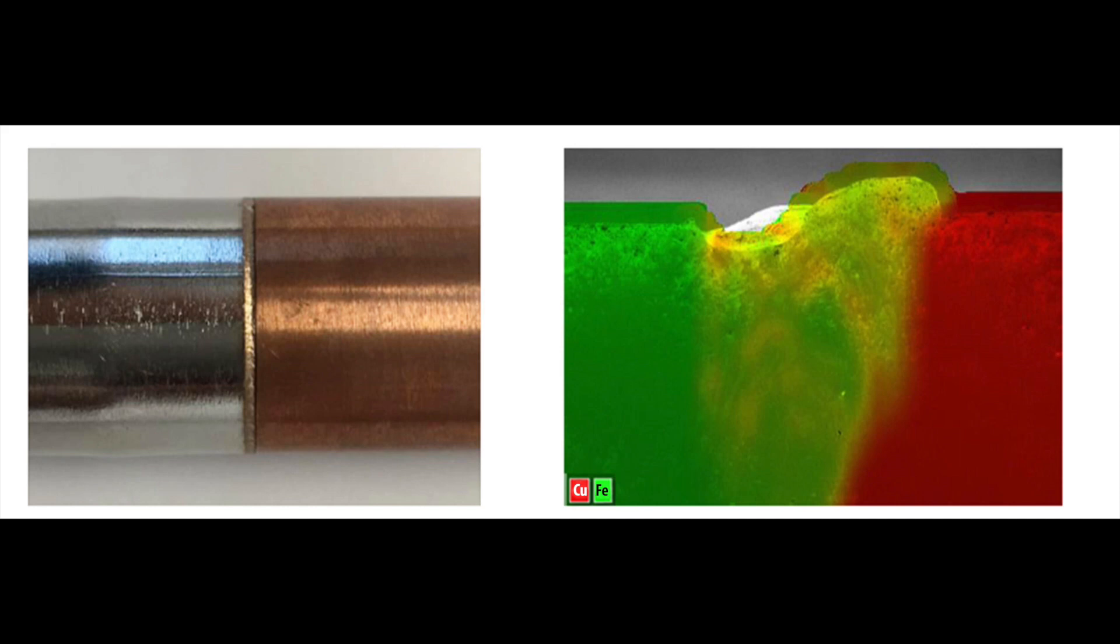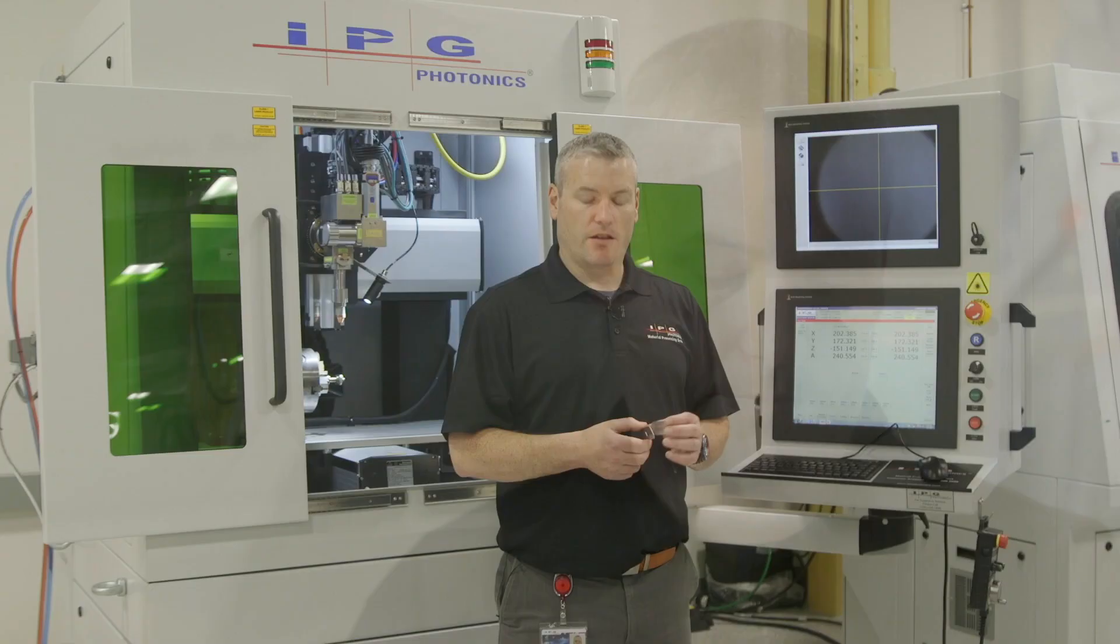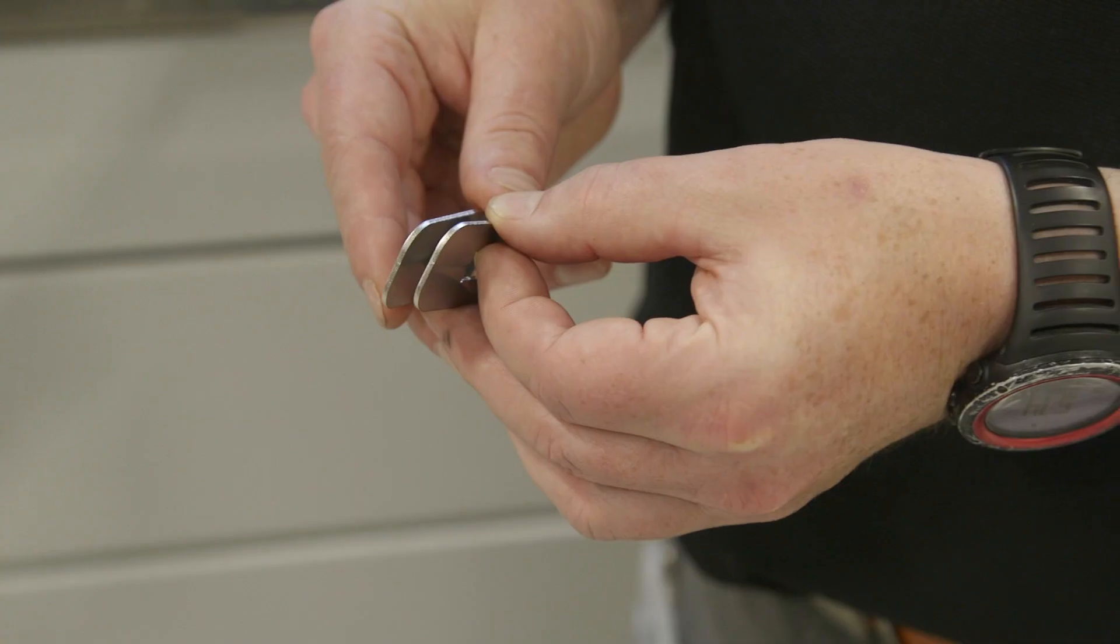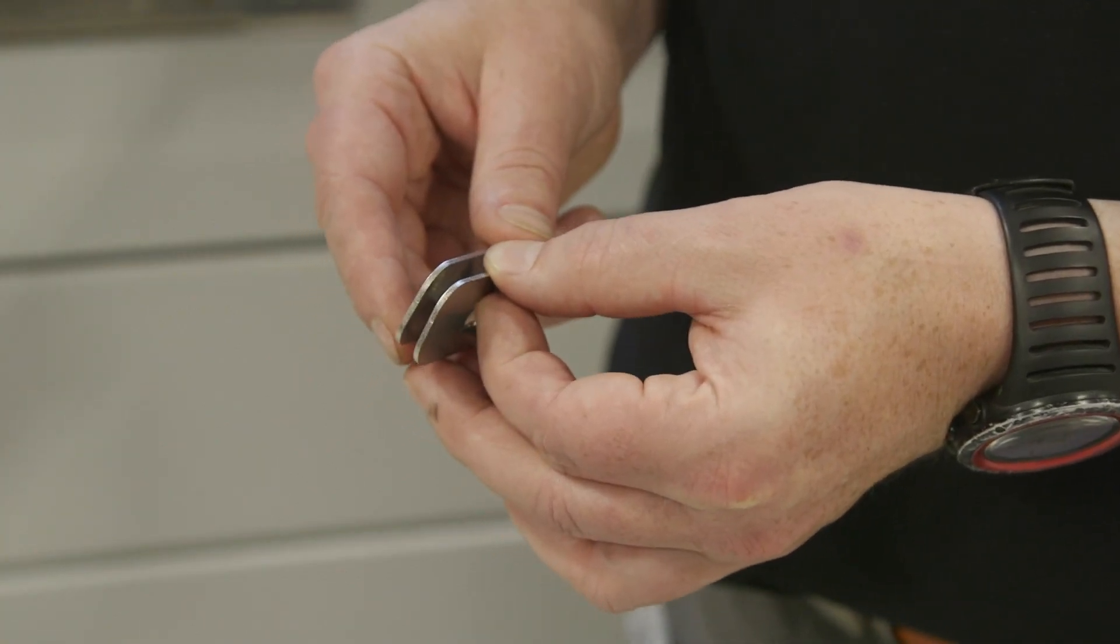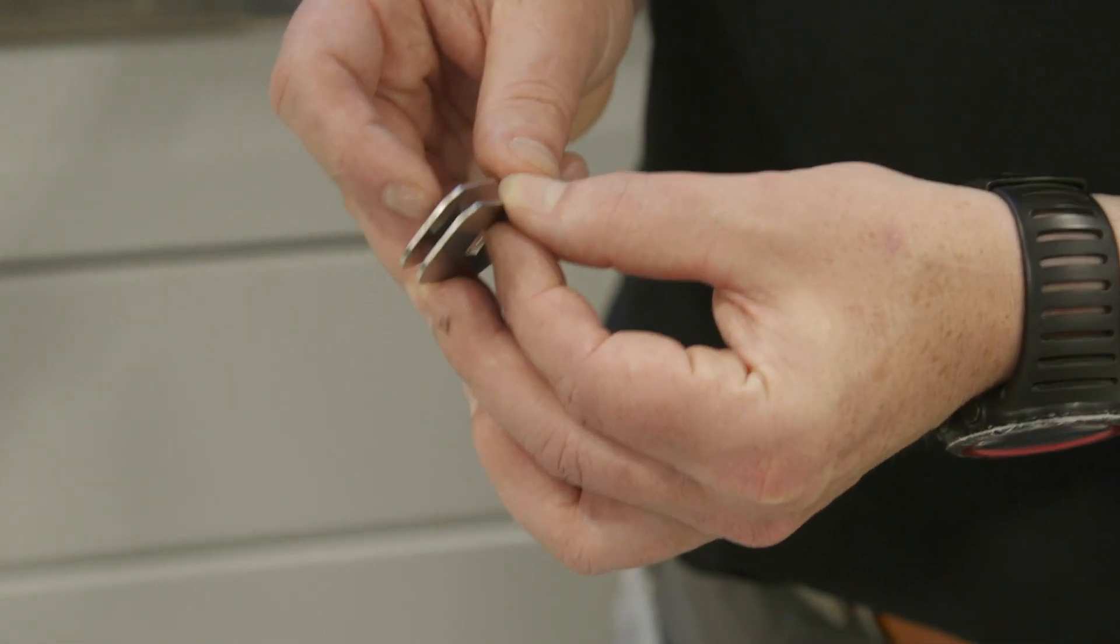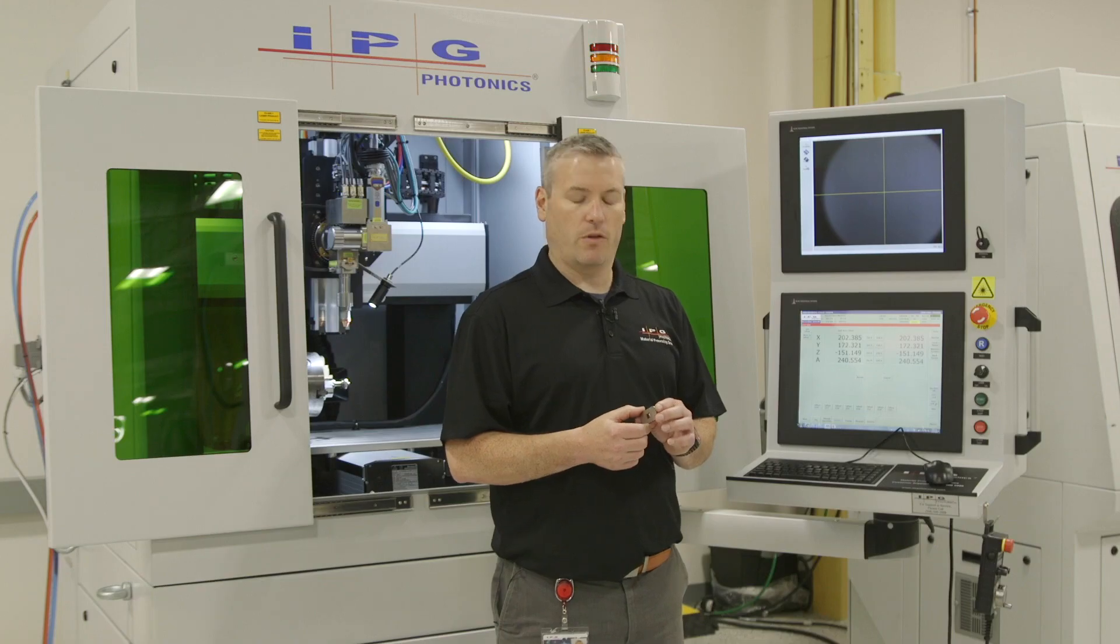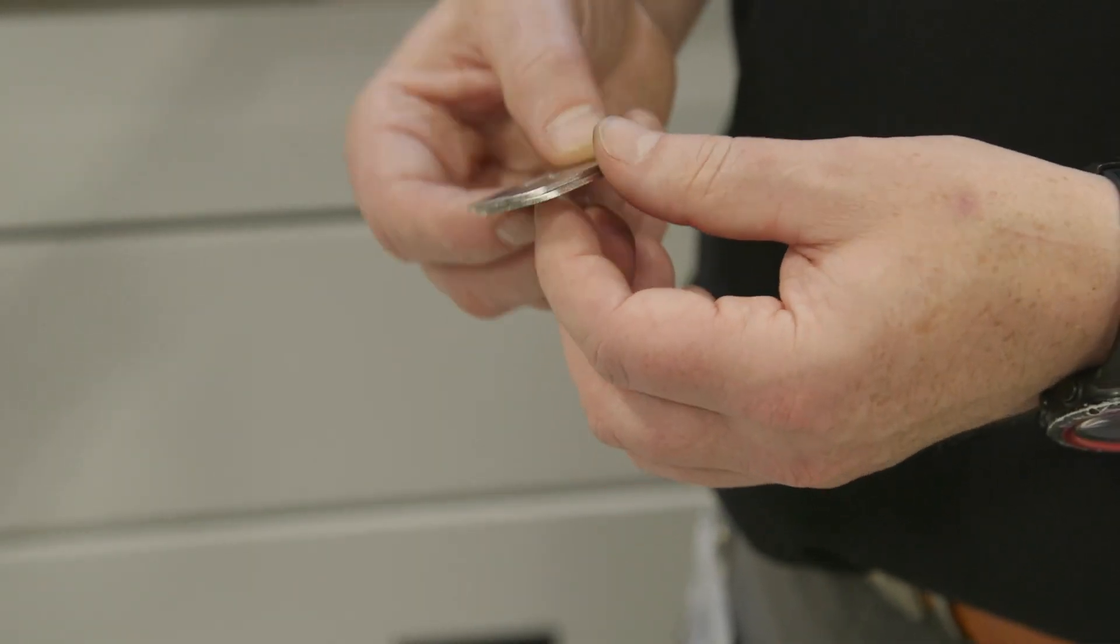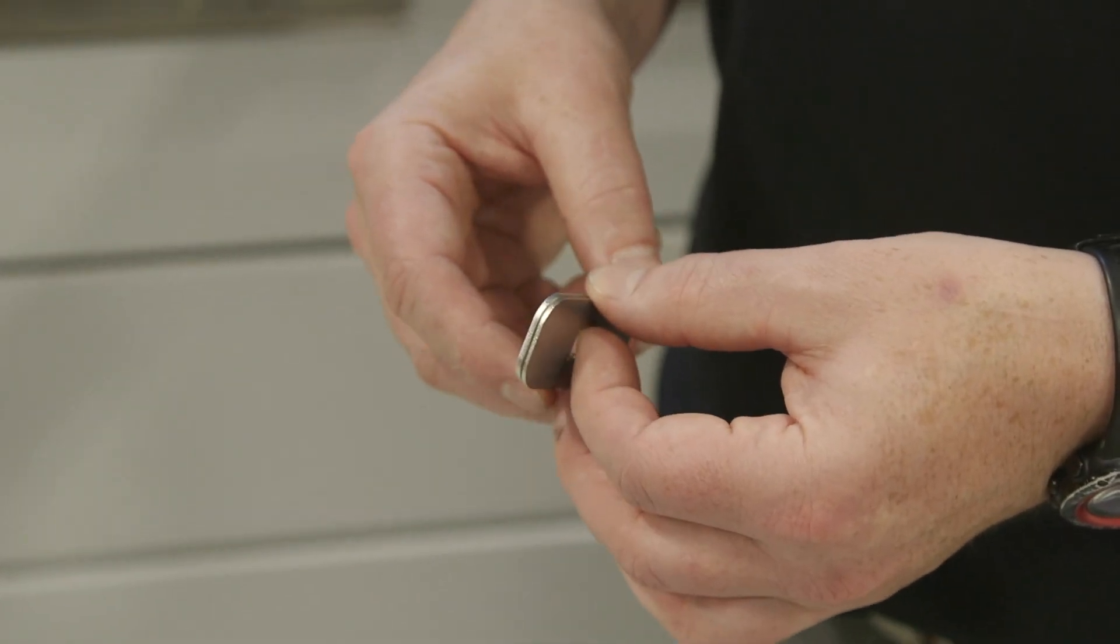On this demonstration, we're going to weld together two pieces of steel. We're going to clamp these two pieces together and simulate a gap in between the pieces. What we're going to show is that the wobble head can give us a higher degree of weld quality with a large gap between our parts.